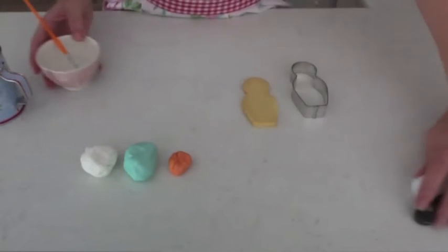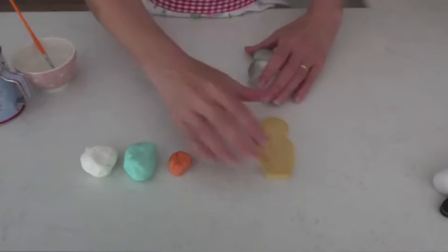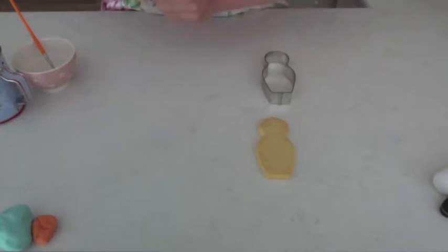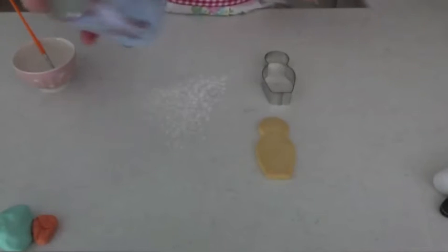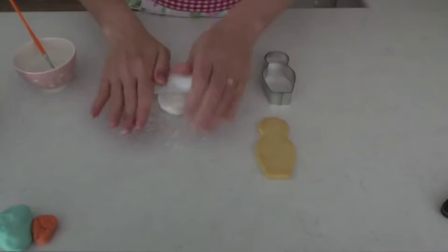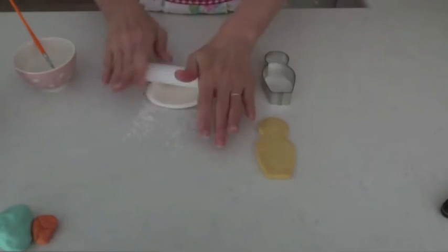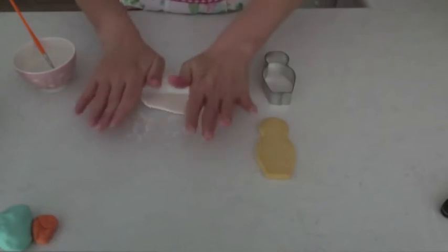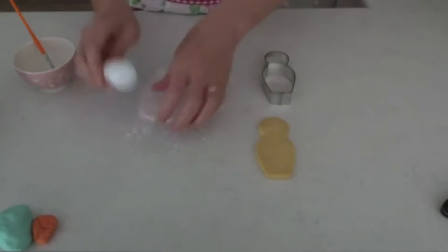So to start off, what we're going to do is roll out the white fondant. Just pop a bit of the cornflour or cornstarch onto your bench. Roll it out as thin as you can.